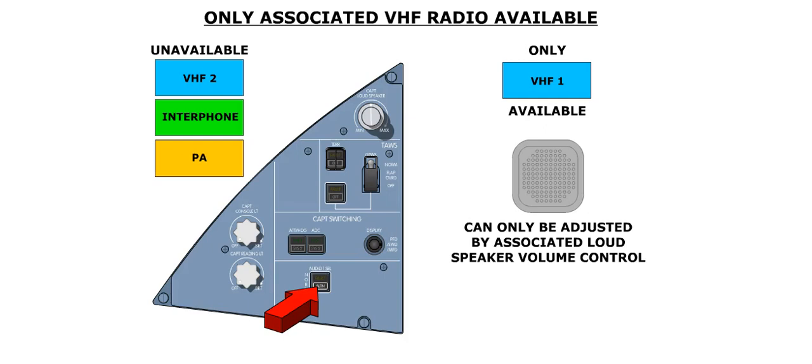For example, if the captain releases the audio 1 select button, only VHF-1 will be available. In addition, the PA, interphone, and other VHF radio are no longer available on the captain's side. In either case, the audio on the affected side can only be adjusted by the associated loudspeaker volume control.